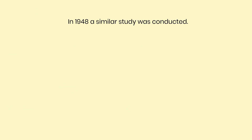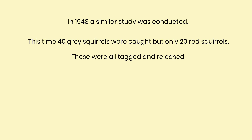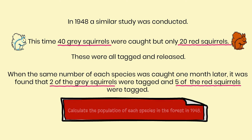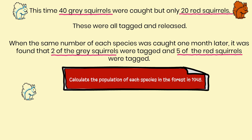Then in 1948 a similar study was conducted. This time 40 grey squirrels were caught but only 20 red squirrels. These were all tagged and released. When the same number of each species was caught one month later, it was found that two of the grey squirrels were tagged and five of the red squirrels were tagged. Calculate the population of each species in the forest in 1948.